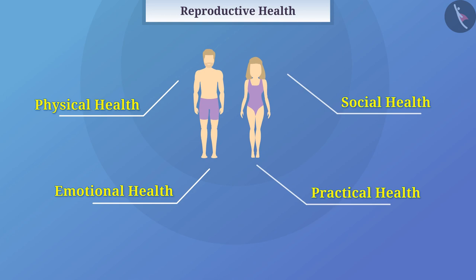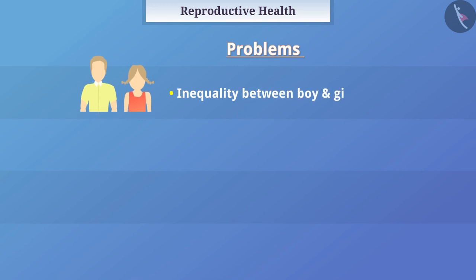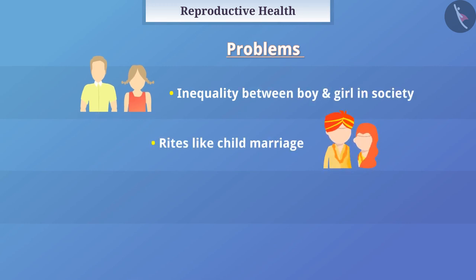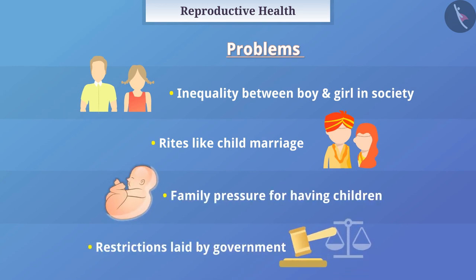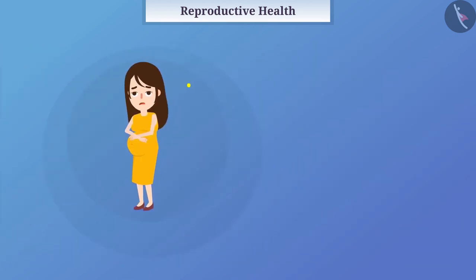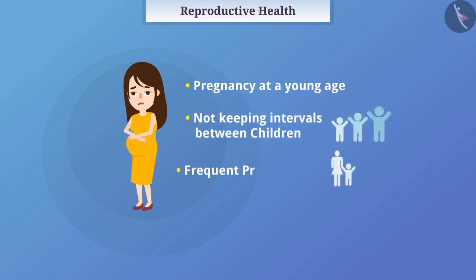There can be many problems related to reproductive health, such as inequality between boy and girl in society, rights like child marriage, family pressure for having children, and restrictions laid by government. Pregnancy at a young age, or not keeping intervals between children — frequent pregnancies often cause adverse effects on the physical health of the woman.